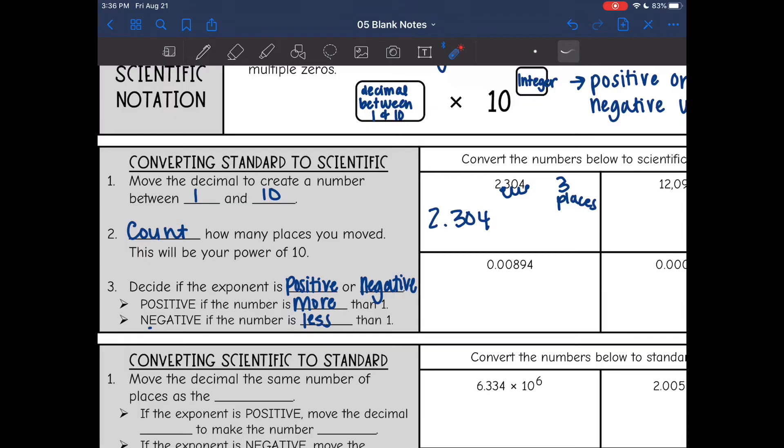Okay, then scientific notation, this is the general form of it up here. It is always times 10. And then I need to decide if the exponent is positive or negative. Since this number was bigger than one, it's a pretty big number, 2,304, it's going to be positive. And I moved three places. So the exponent is three.